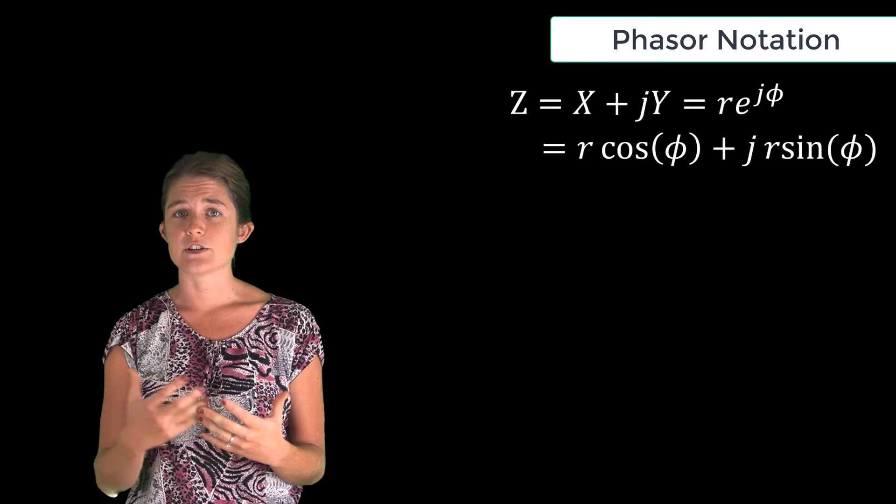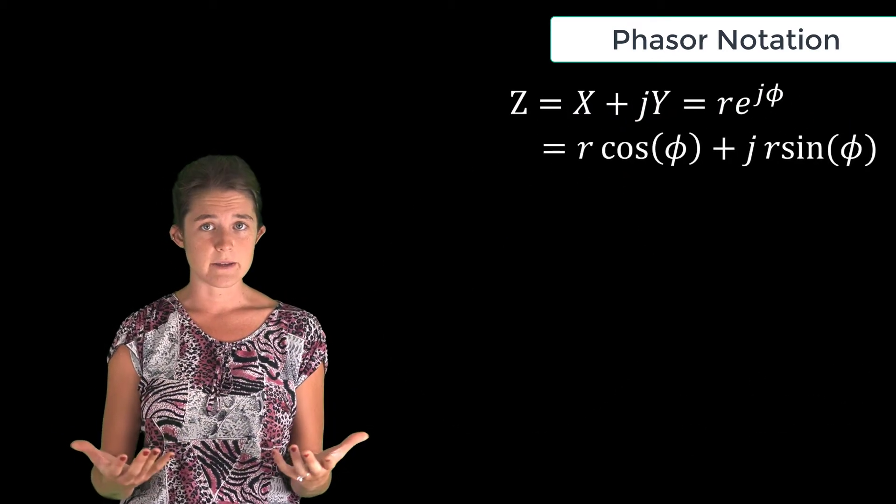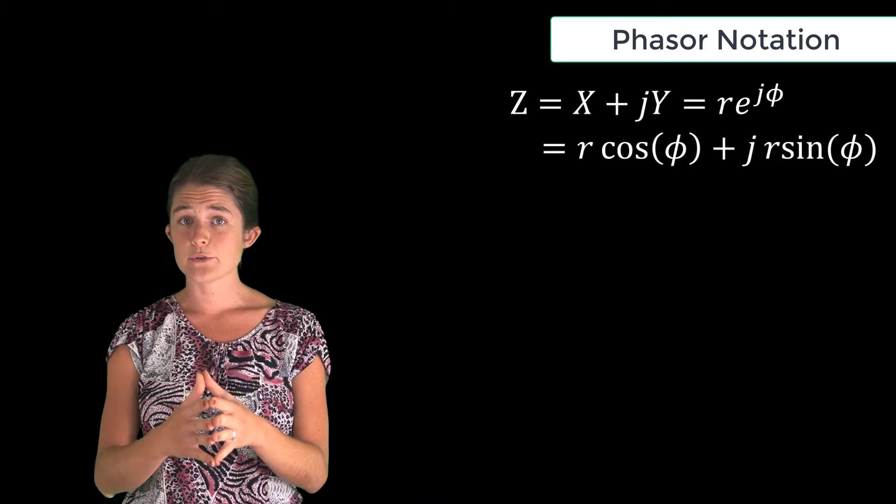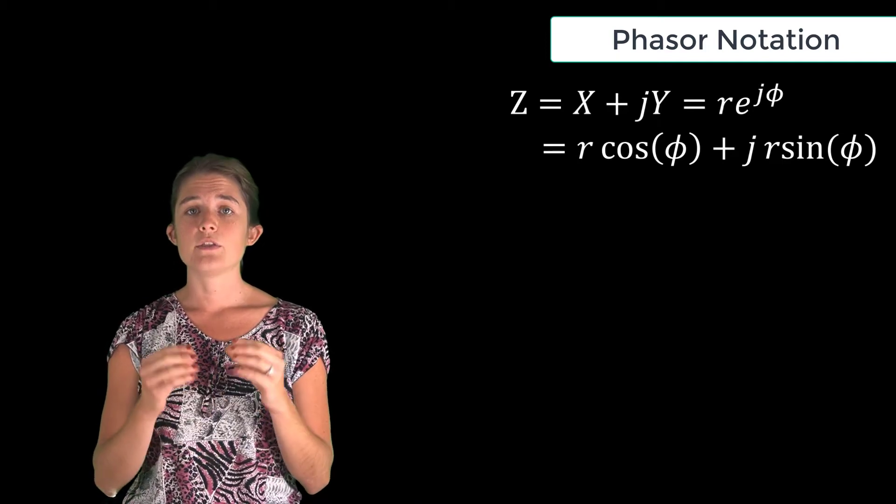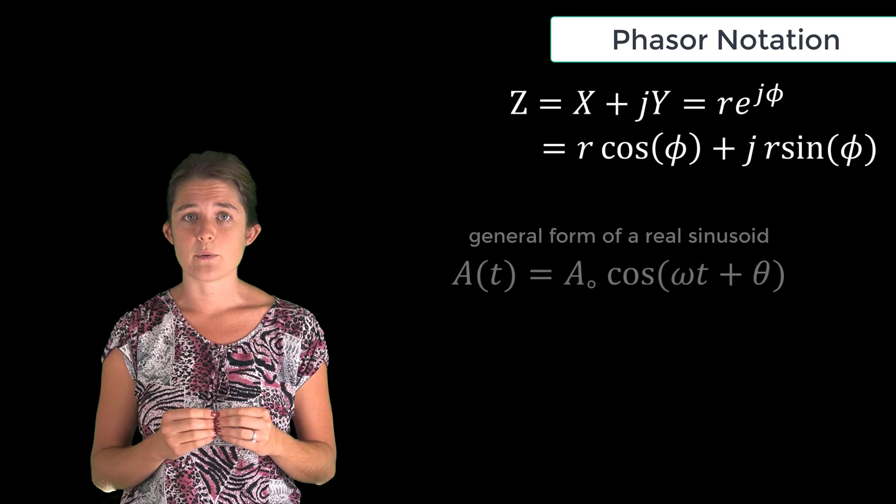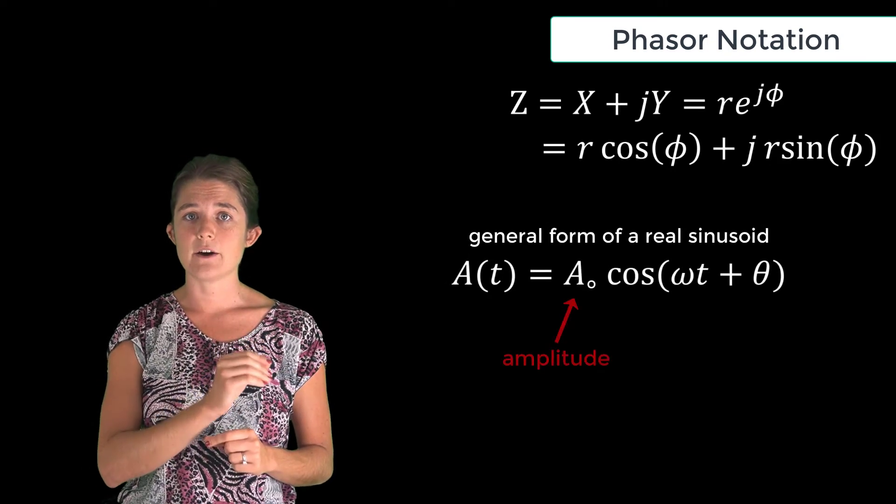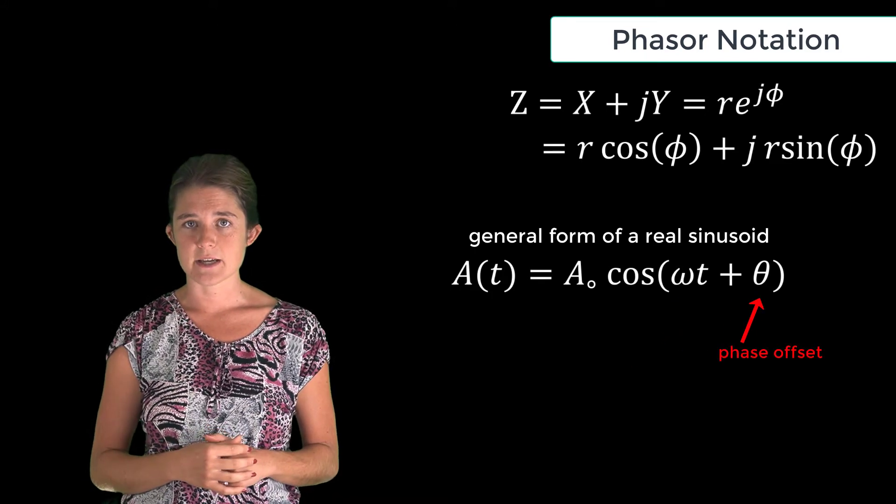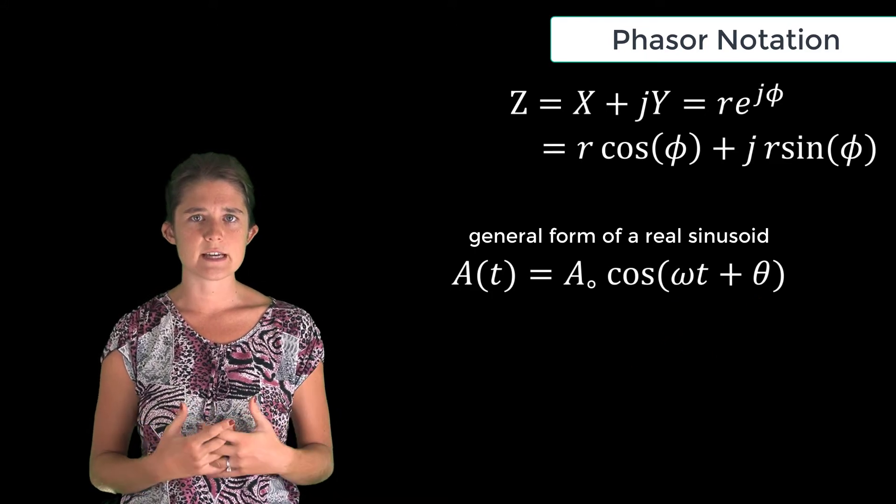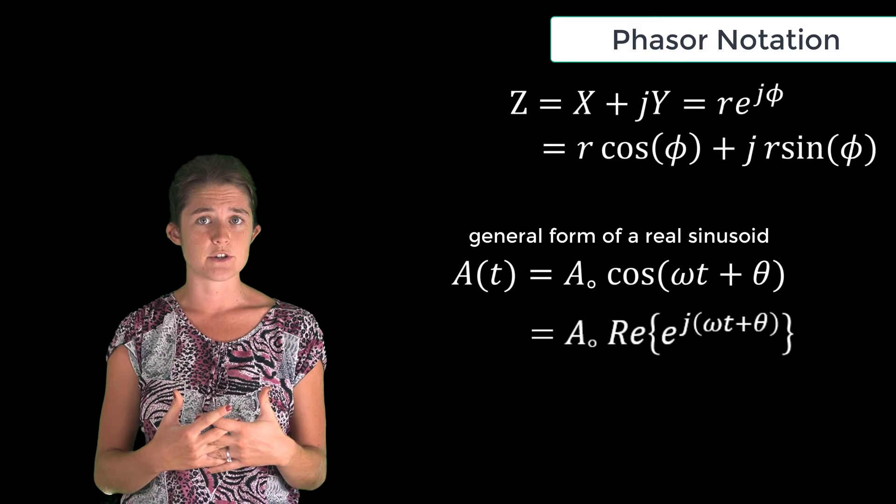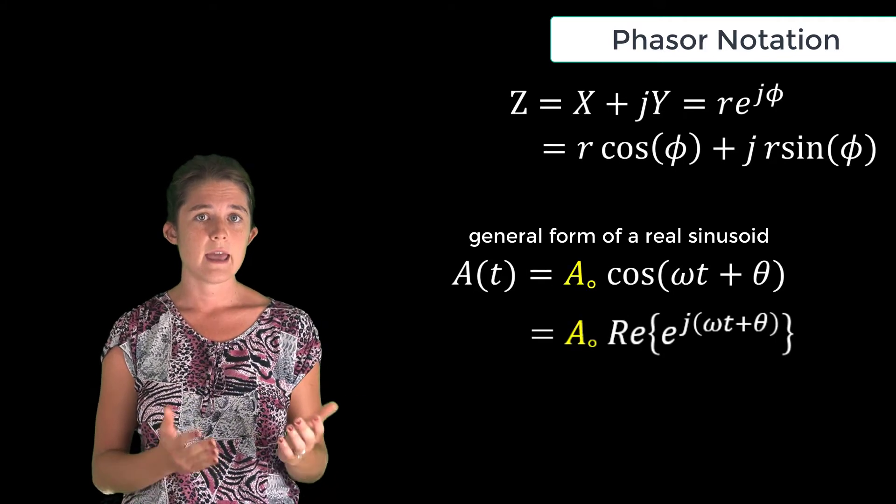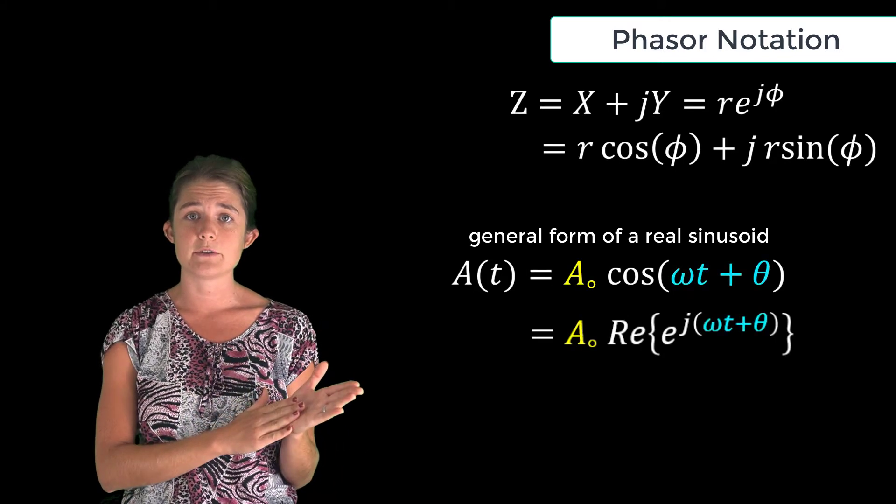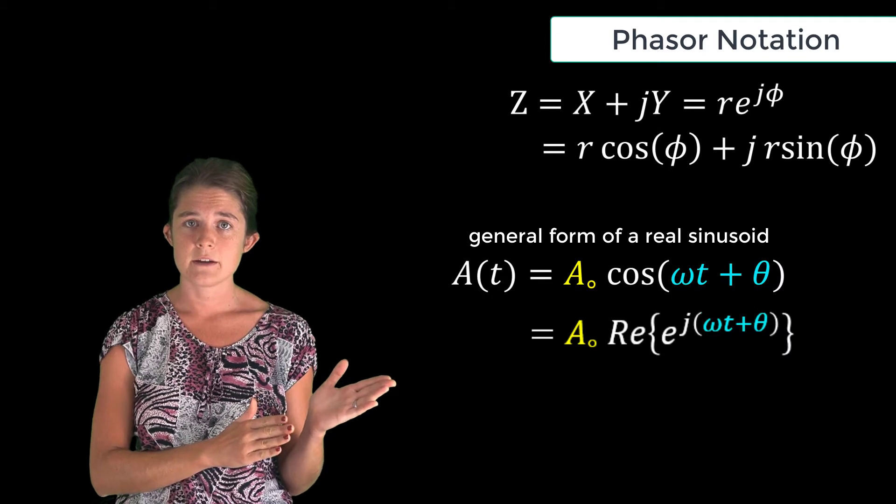When we're dealing with a real quantity such as voltage or current or electric field, and the quantity is sinusoidal or time harmonic, the general form of the equation for that quantity is here, where A naught is the amplitude of the wave, omega is its frequency, and theta is a phase offset. We can consider this as the real part of a complex exponential with amplitude A naught and angle equal to the argument of the cosine, omega t plus theta. So by Euler's identity these two quantities are equal.